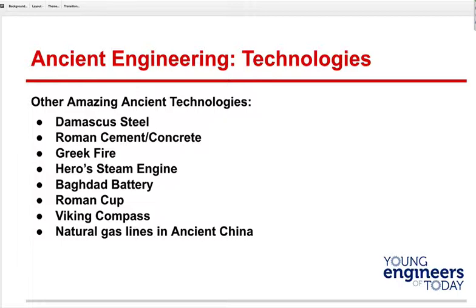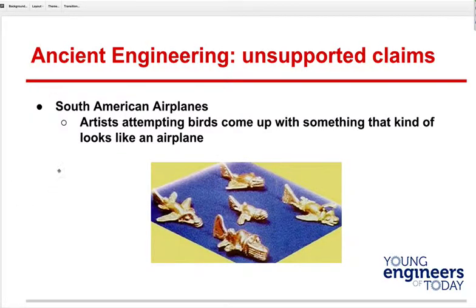These are all things we've dug up — we've found proof, looked at the details, recreated them. But sometimes people see gold objects and say 'wow, it looks like an airplane, they must have had airplanes.' No — in their religion they had lots of different bird symbols. This is most likely birds. We haven't found any half-built airplanes anywhere.